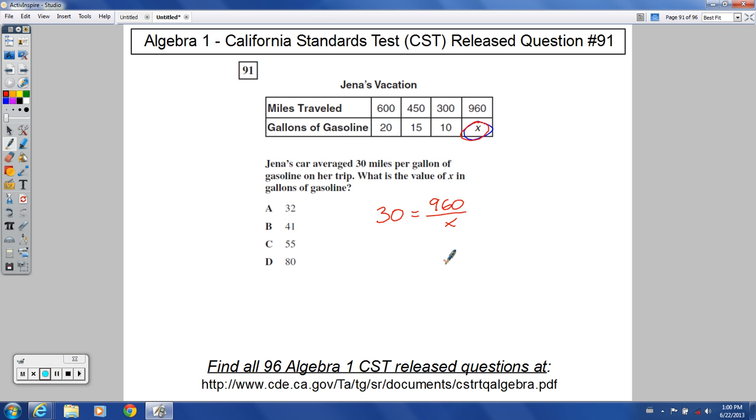So we're solving for X here. How can we get X by itself? Looks like I can multiply both sides by X. And I'd have 30X equals 960. You can divide, then, both sides by 30. To get X, this would cancel out with this. The single zeros would cancel out with each other. 96 divided by 3. That is going to be 32.